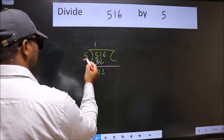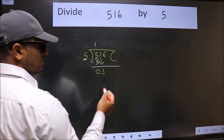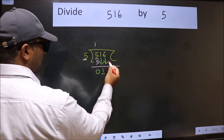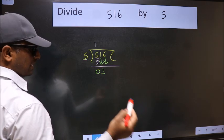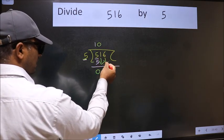Now here we have 1 and here 5. 1 is smaller than 5. So we should bring down the second number. And the rule to bring down second number is we should put 0 here. Then only we can bring this number down.